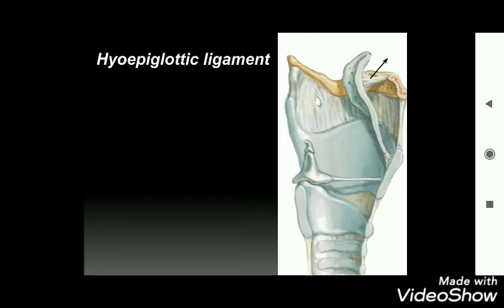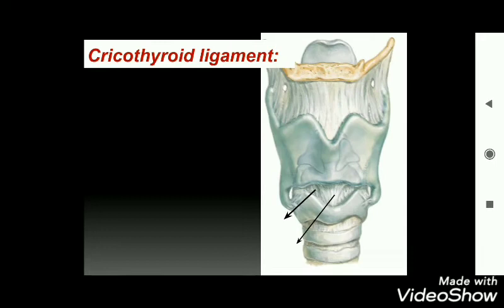The cricothyroid ligament connects the superior border of the cricoid cartilage to the inferior part of the thyroid cartilage. The central part is thickened and forms a thick cord-like structure called the conus elasticus.